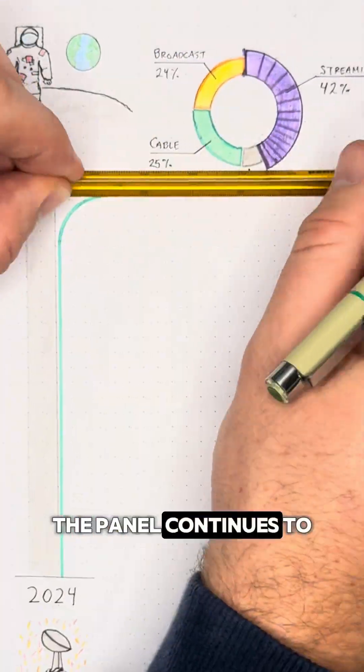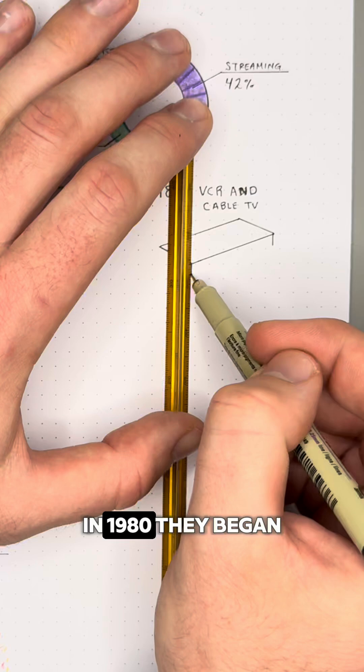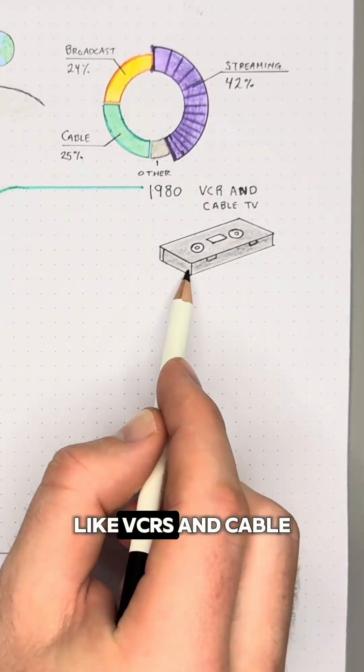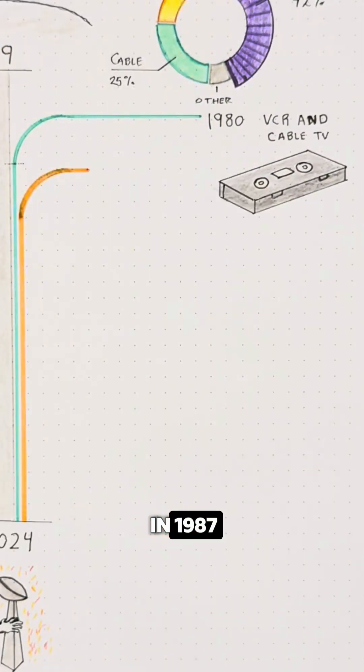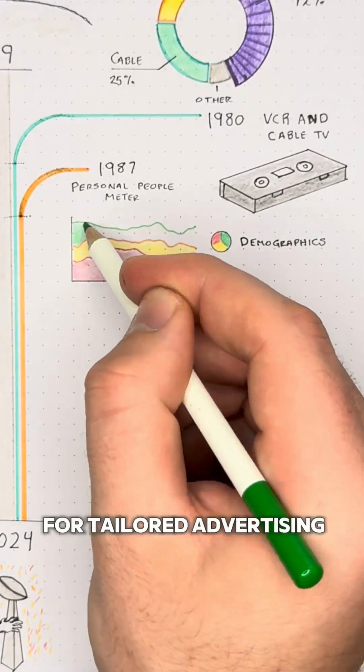To this day, the panel continues to drive these core ratings, but there have been updates. In 1980, they began tracking new technologies like VCRs and cable. In 1987, the PeopleMeter debuted, capturing daily viewer demographics and paving the way for tailored advertising.